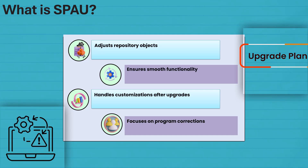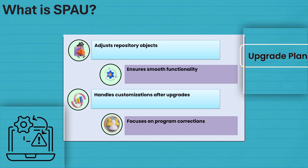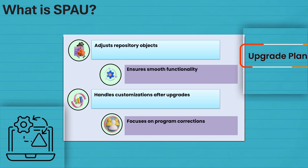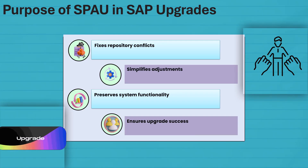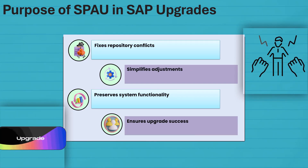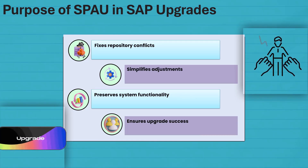SPOW is like SPDD's cool sibling who handles the post-party cleanup after upgrades. It focuses on repository objects and makes program corrections so everything runs like a charm. Let's explore SPOW's role in tidying up your SAP system post-upgrade. SPOW's mission: fixing conflicts and ensuring smooth functionality. It's like that friend who quietly makes everything better behind the scenes. By handling repository objects and adjustments, it paves the way for a successful upgrade.